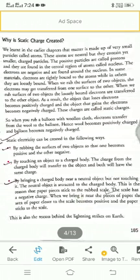Is that clear? So static electricity can be created in the following ways. First, by rubbing the surface of two objects so that one becomes positive and another becomes negative. There are no fixed rules about which one becomes positive and which becomes negative.